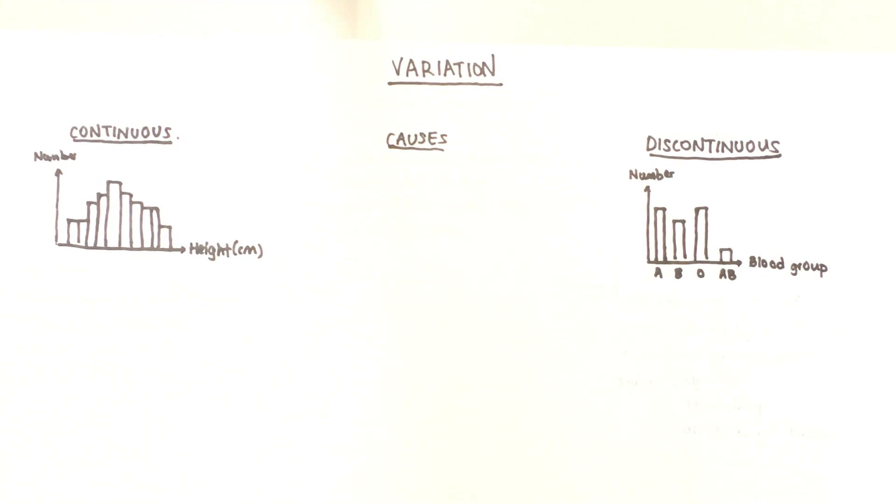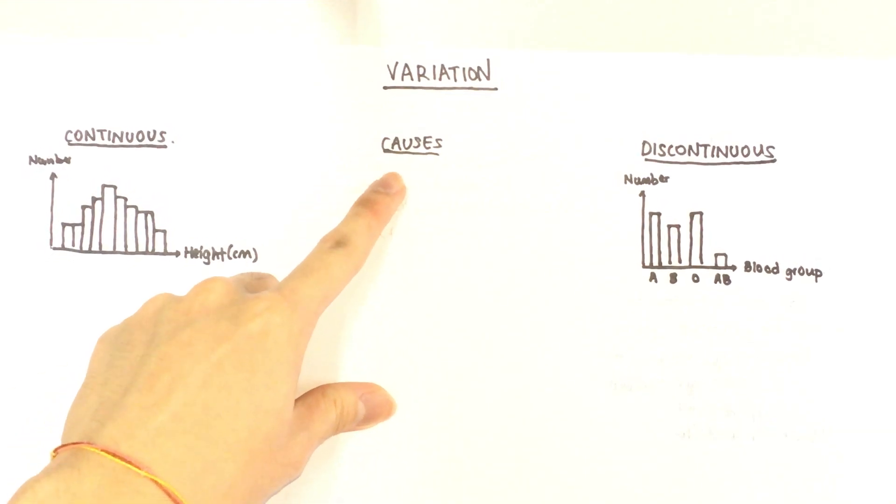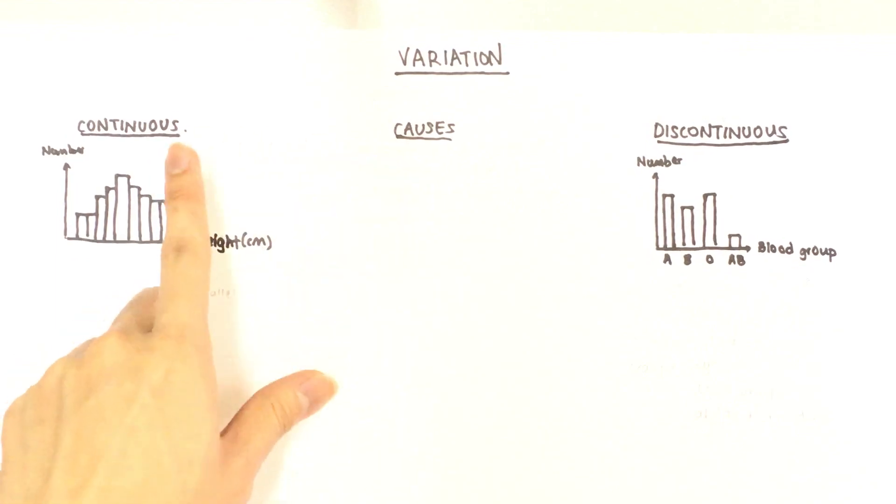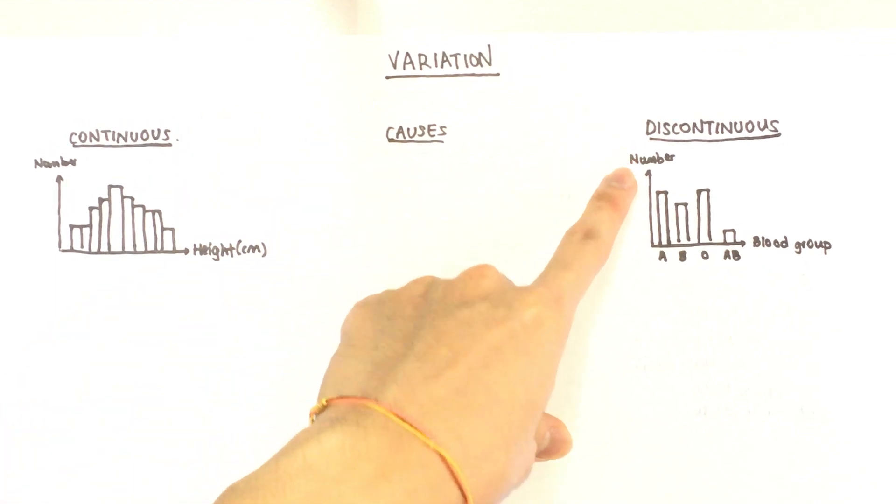Morning everyone. Today we'll be talking about variation and we're going to focus on the causes and then the two main types of variation which is continuous and discontinuous. So let's start off by understanding what is variation.